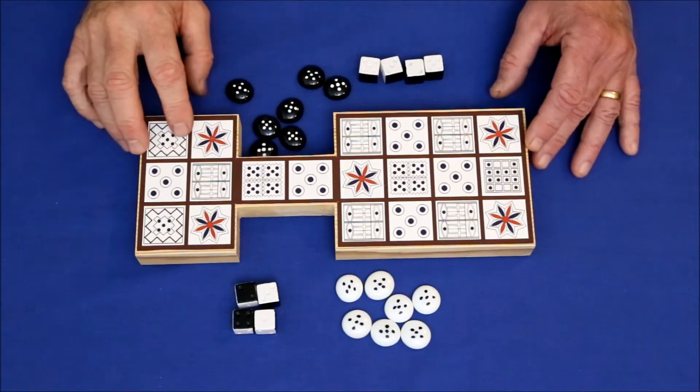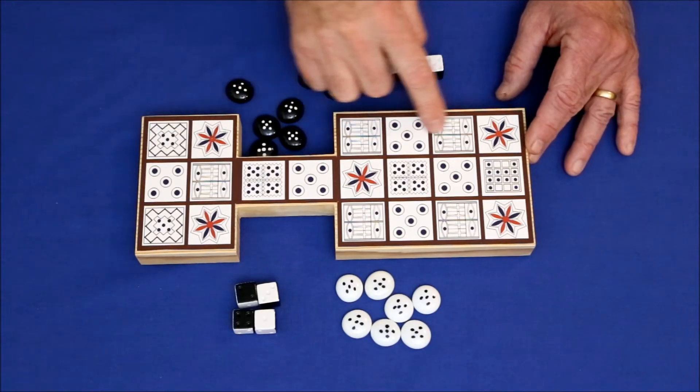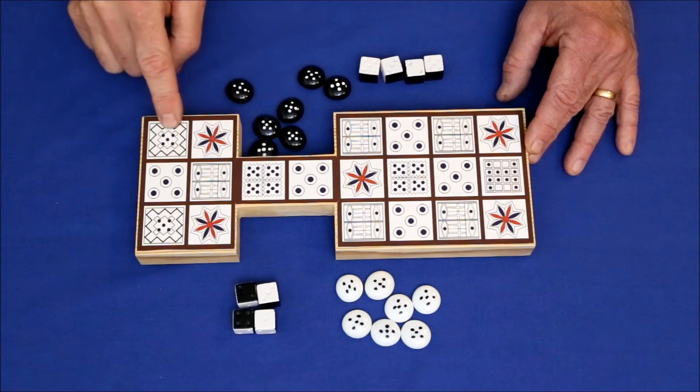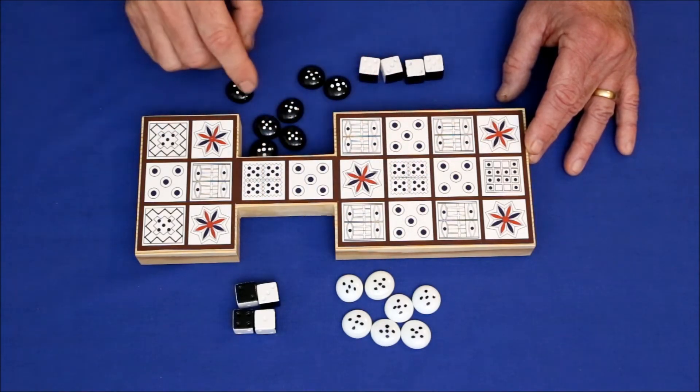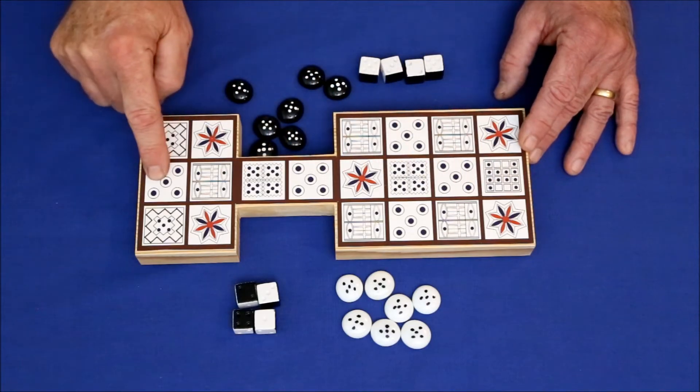Each player has a side. The first four squares and the last two are safe squares. The opponent can't get into these. The common squares in the middle are the combat zone.